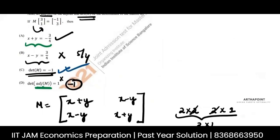So the answer of determinant would be minus 1 and not 1, so this is also incorrect. So the answer would be A and C. These are the answer. Thank you.